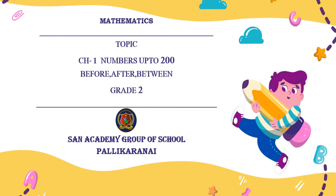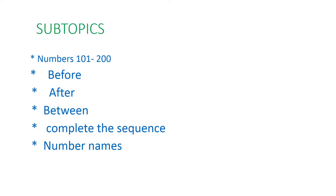Hi children, we are going to continue Chapter 1: Numbers up to 200. Today we are going to see the subtopics: Numbers from 101 to 200, Before, After and Between Numbers, How to Complete the Sequence, and Number Names.